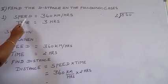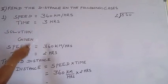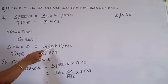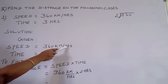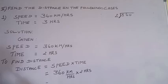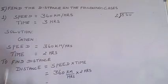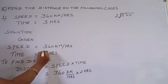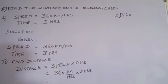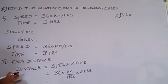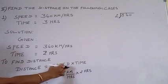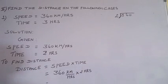So what are they giving? The speed is equal to 360 km per hour. Then time is equal to 3 hours. To find distance. Already we discussed about the formula for the distance. The distance is equal to speed into time, or speed multiplied by time.